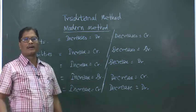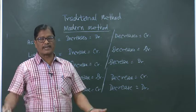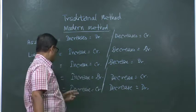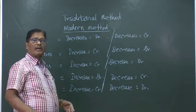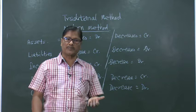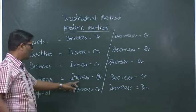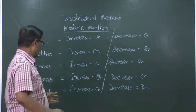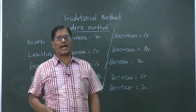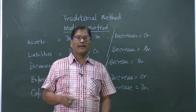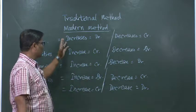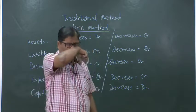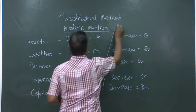These modern method rules are derived from the traditional system. Assets always carry a debit balance, so increase is debit and decrease is credit. Liabilities are credit balances, so increase is credit and decrease is debit. Incomes are credit balances — increase is credit, decrease is debit. Expenses are debited in the traditional system — so increase is debit, decrease is credit. Capital is usually a credit balance — increase is credit, decrease is debit. This method is just a derivation; the originality is always in the traditional method.